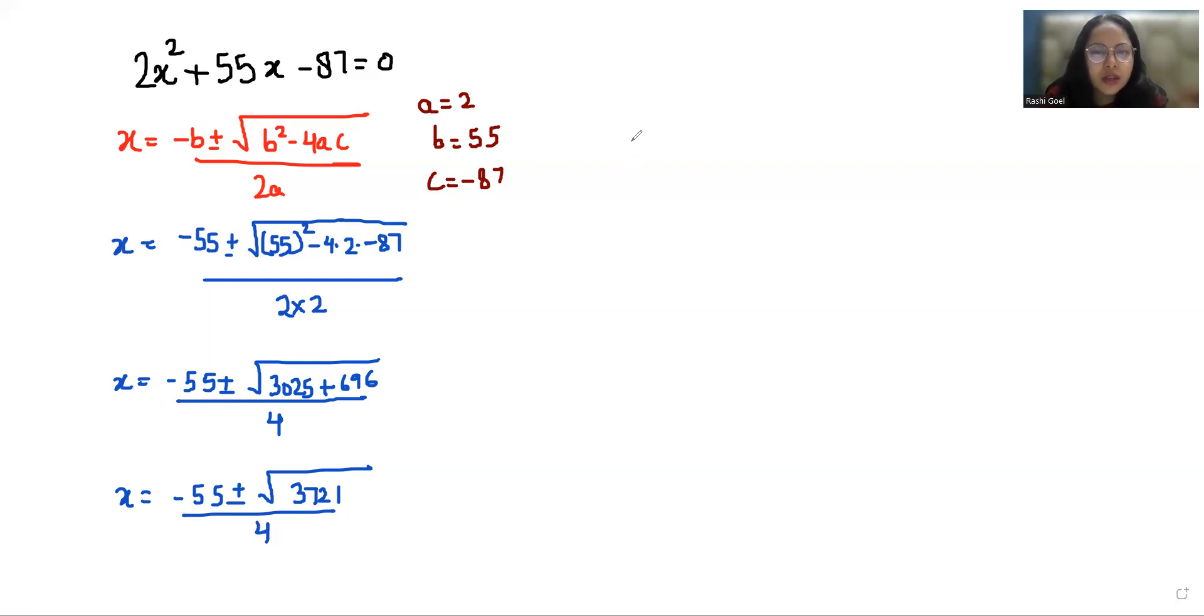Now x equals negative 55 plus or minus, for this 3721 if we find the square root of which number, we can use the long division method. We'll make pairs from the end of two numbers and check it's less than 37. The square of 6, that is 6 times 6, is 36. 1, this is 21 came out. Then add the 6, 12, and we can multiply with 1 to get our number.